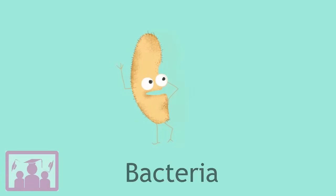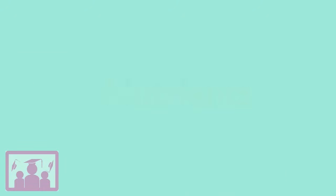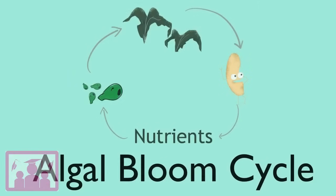Next, bacteria start to break down the dead plants and algae, and that releases more nutrients back into the water, continuing the algal bloom cycle.